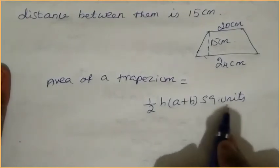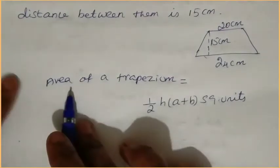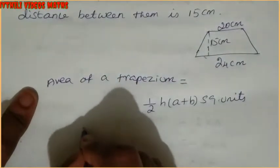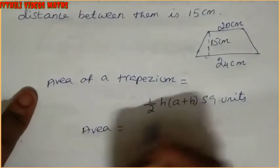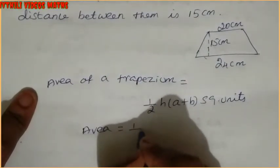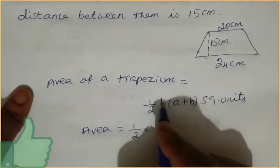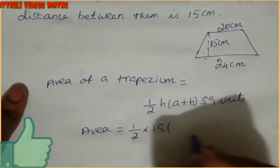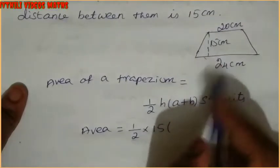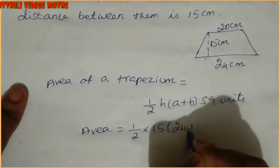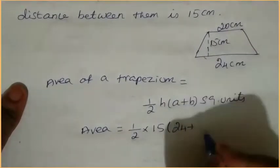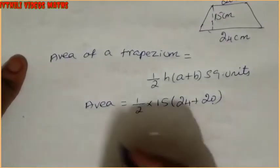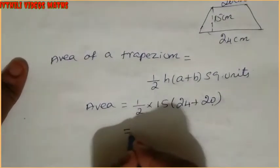We have to find the area, so write: area equals 1 by 2 into h value, which is 15, into a value which is 24, plus b value which is 20.